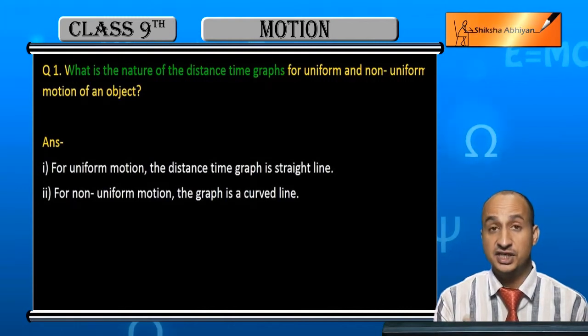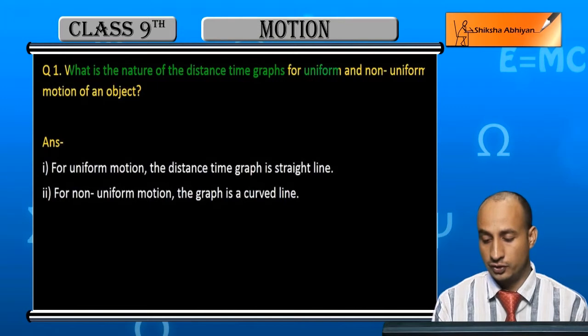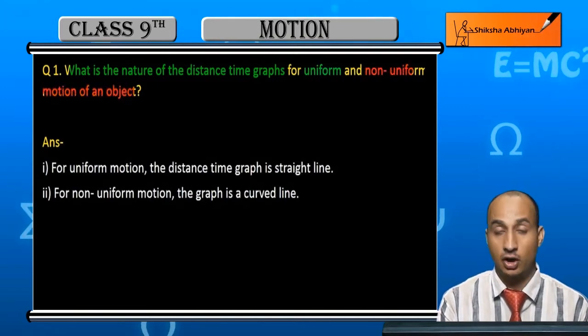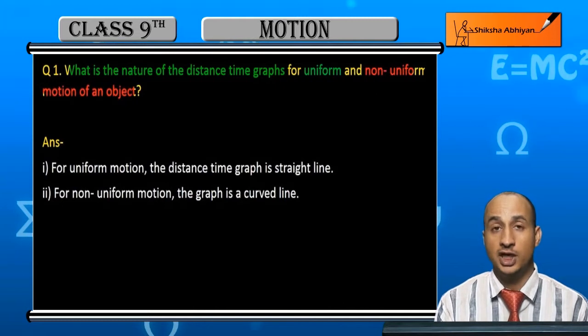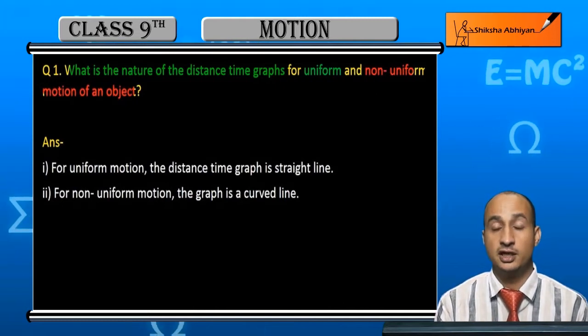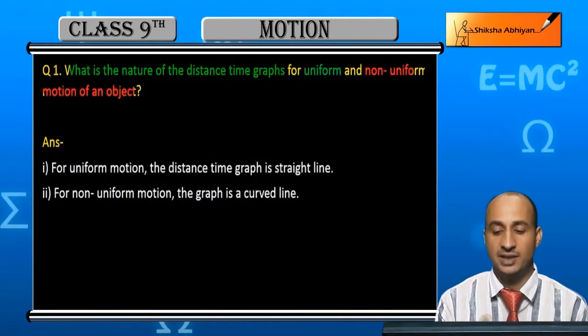...for uniform and non-uniform motion of an object? What is the nature and shape of the distance-time graph when an object is in uniform motion versus non-uniform motion?